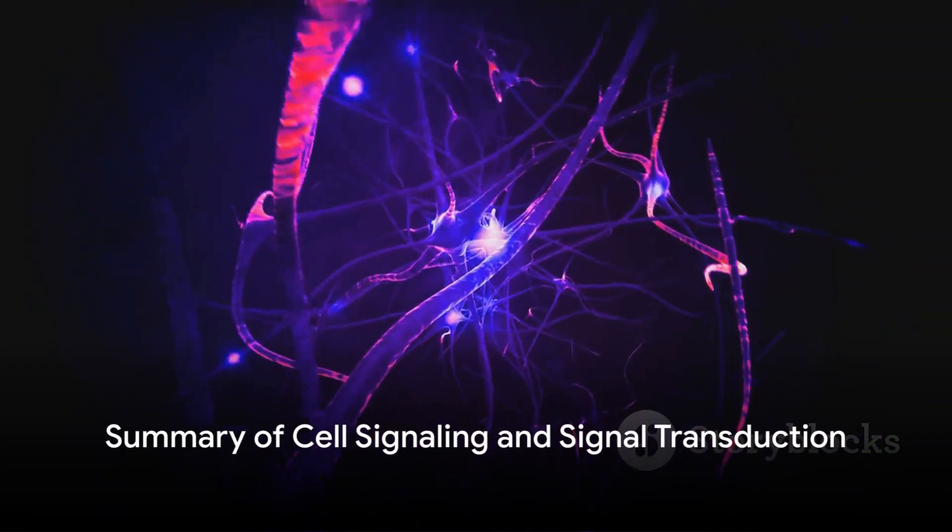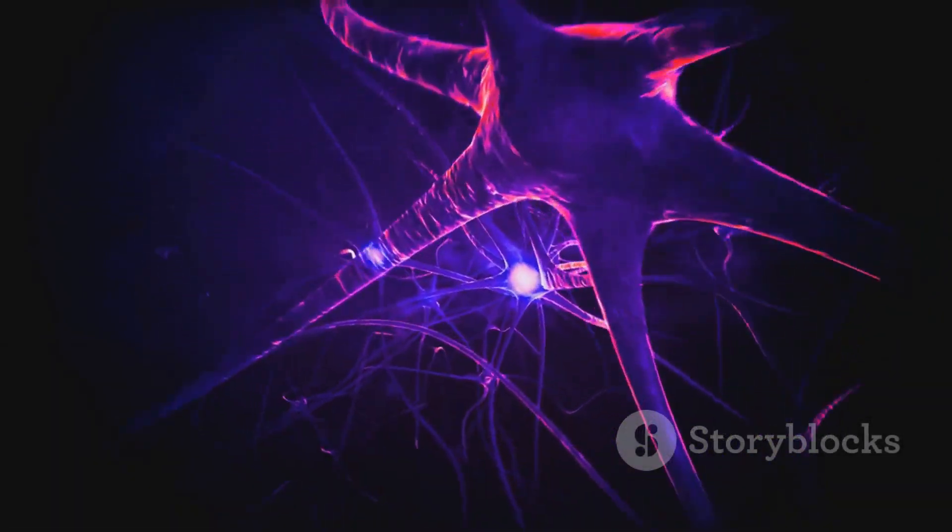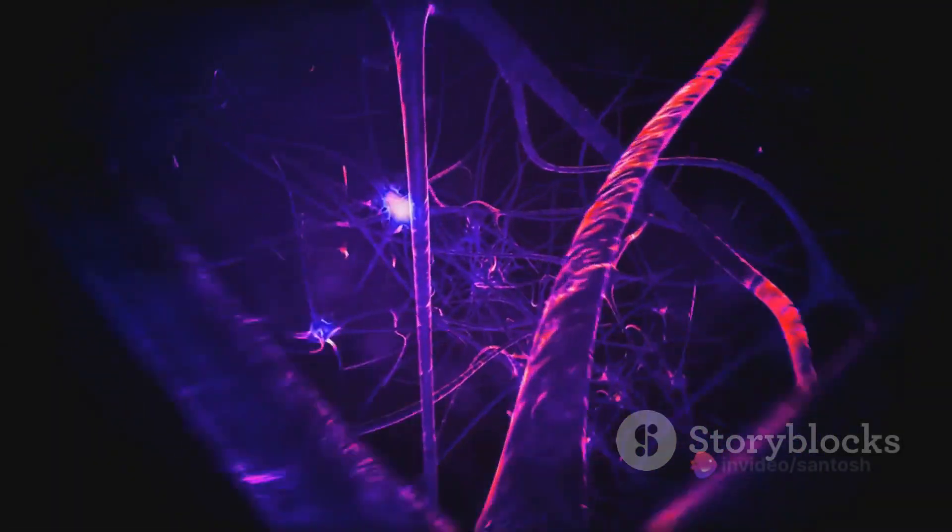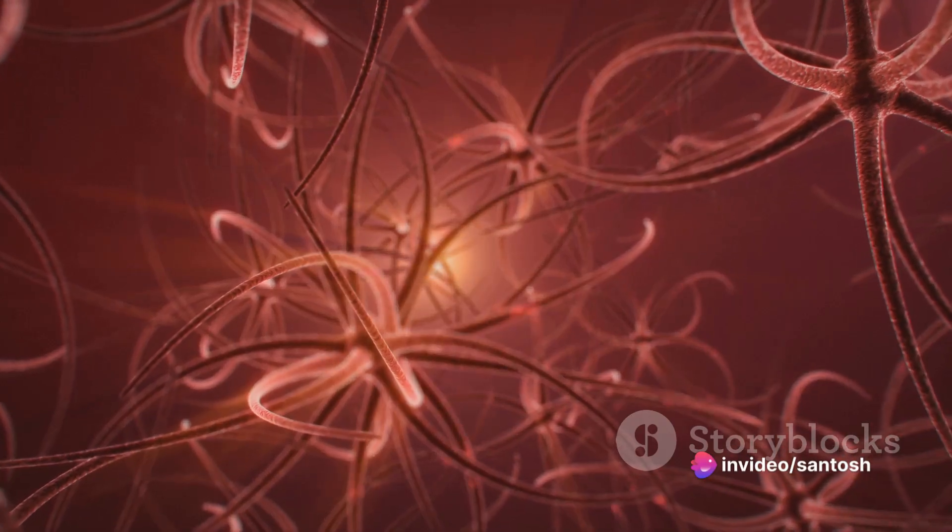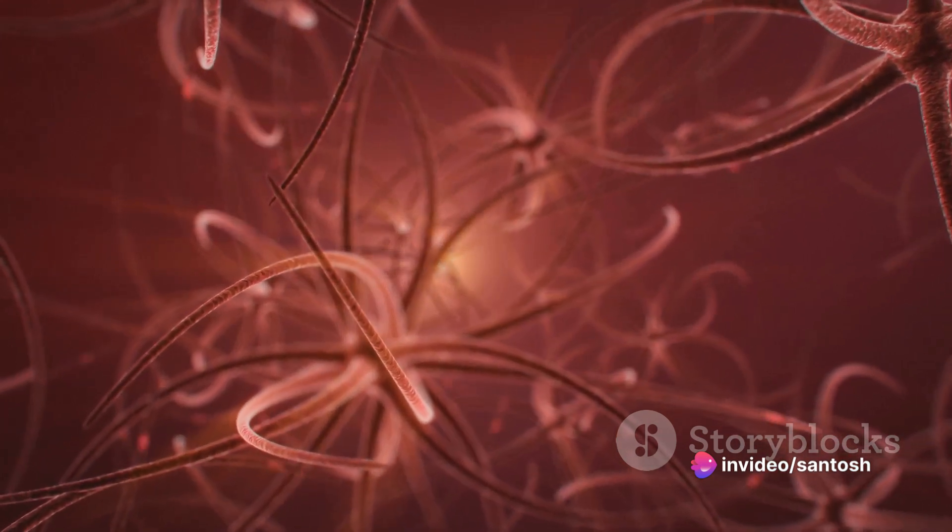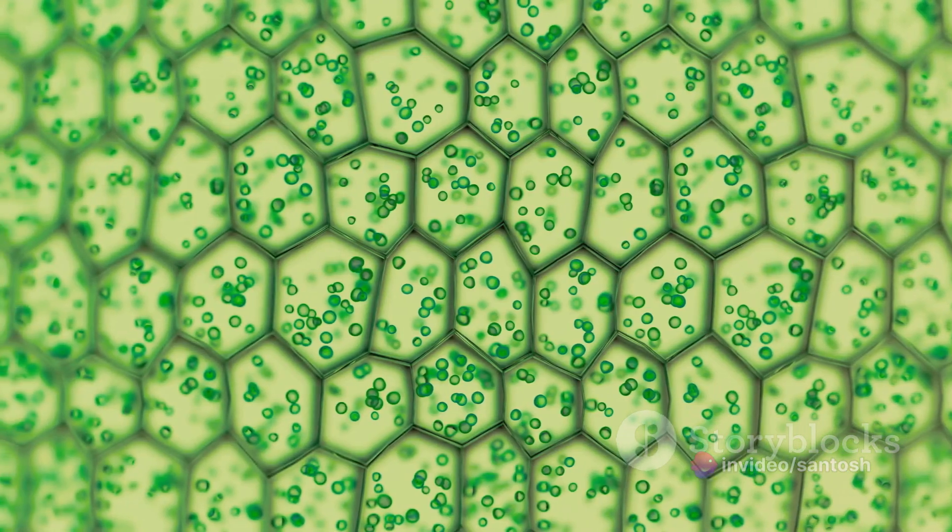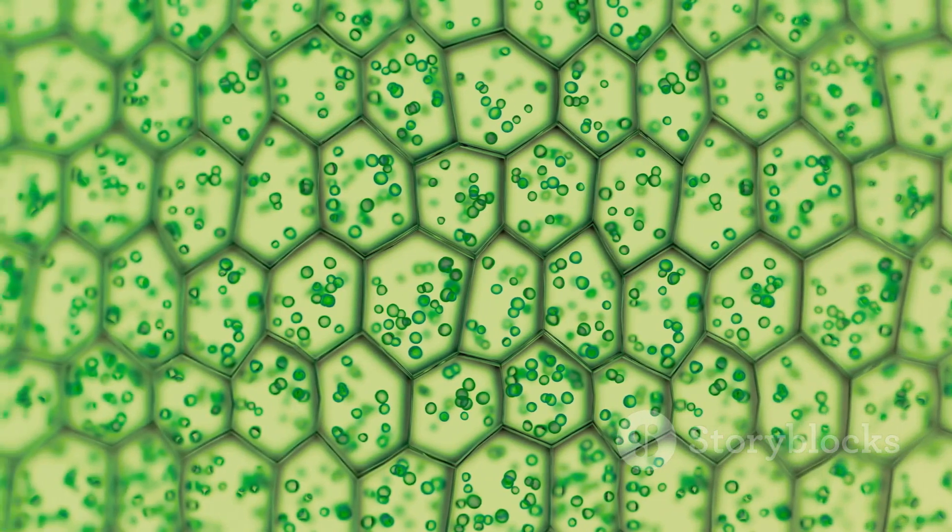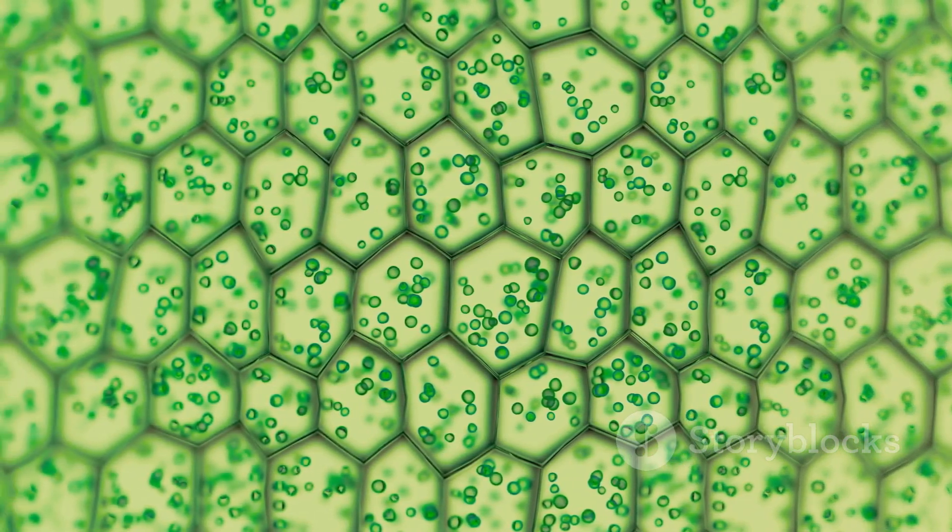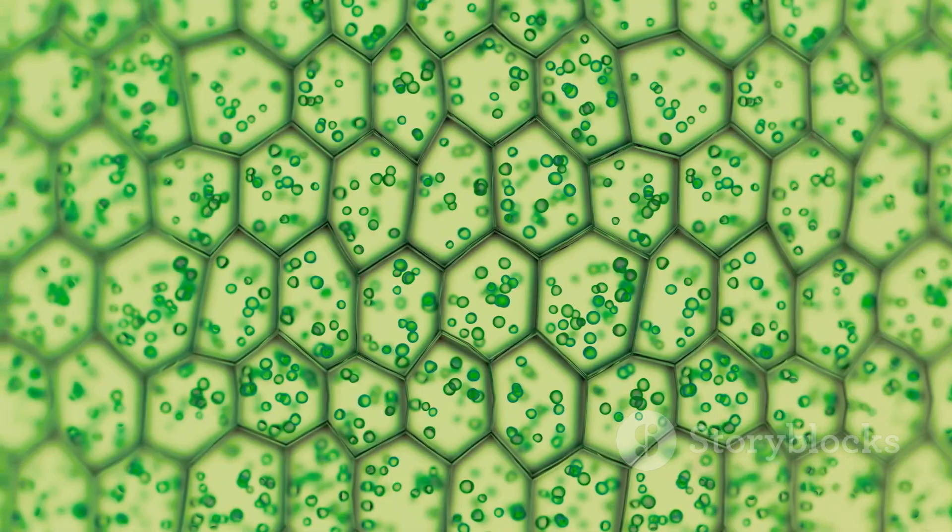So, to sum it up, cell signaling is the process where cells send and receive messages through chemicals. Signal transduction is the language they use to understand these messages. It's a three-step process: reception of the signal, transduction or amplification of the signal, and finally, response to the signal.